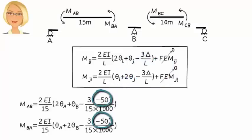What is delta here? It is the differential vertical displacement between the ends of the segment. In other words, it is our support settlement. So, delta equals negative 50 millimeters. For the sake of consistency, I have converted the unit of displacement from millimeter to meter here.